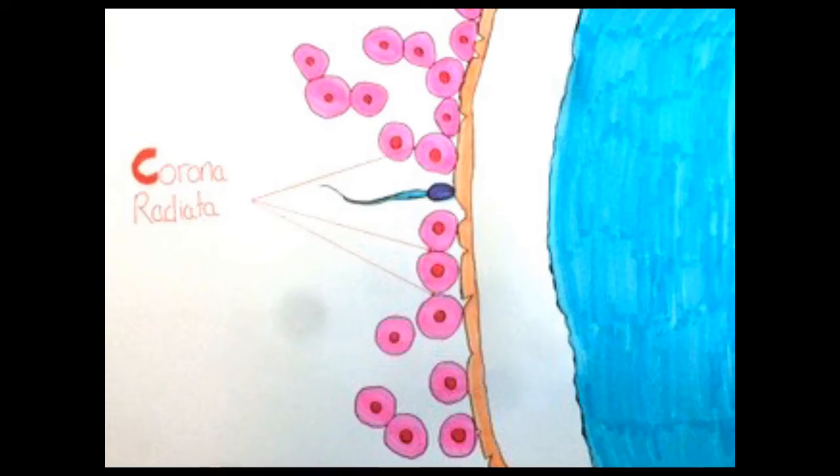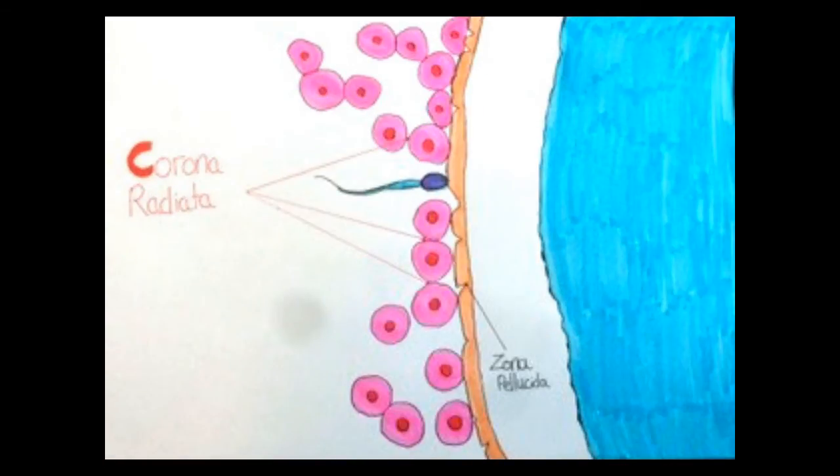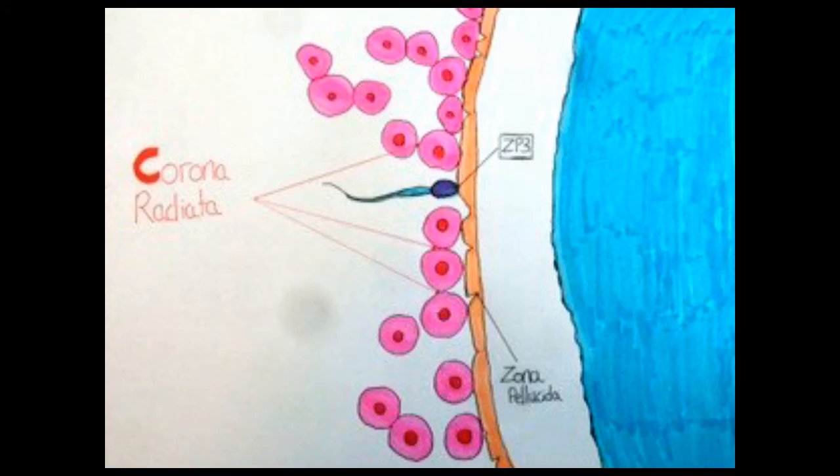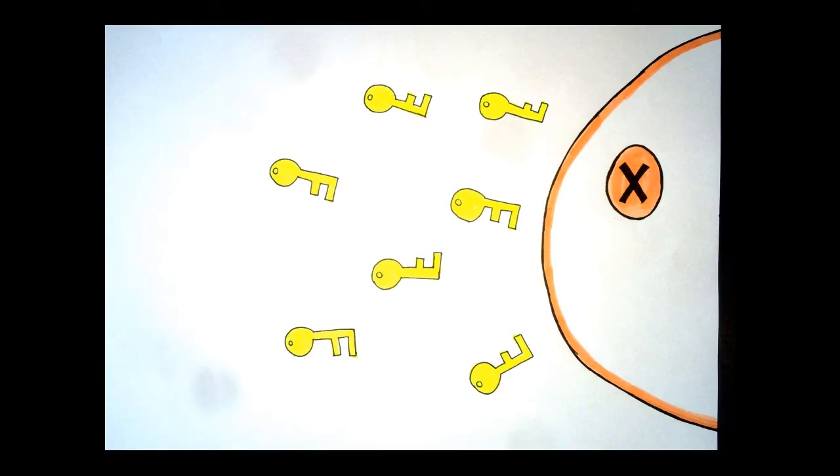Now, upon reaching the egg, the sperm begin to push through the corona radiata, coming in contact with the zona pellucida, which is the outer layer of the egg. The zona pellucida is lined with proteins that act as a lock, while the sperm heads act as a key. Each species has their own unique lock and key system in which gametes of the same species recognize each other.